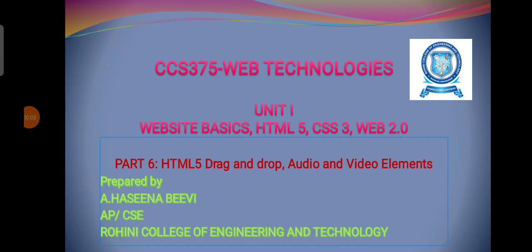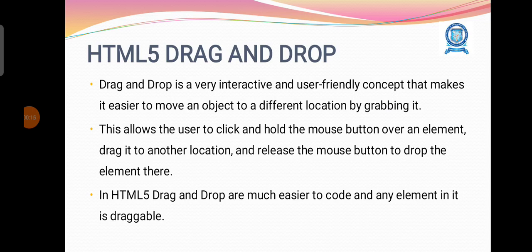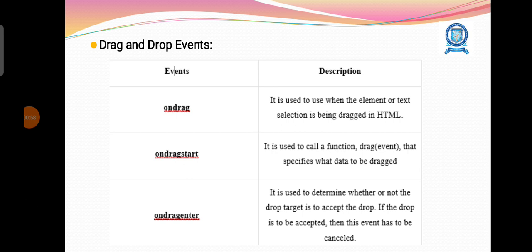This video lecture covers drag and drop and audio/video control elements of HTML5. HTML5 is the advanced version of HTML which supports more attributes to develop web pages. One such facility is drag and drop — we can drag an object or image from one place to a destination. This is a very interactive and user-friendly concept that makes it easier to move objects to a different location by grabbing, clicking, and holding the mouse button, then releasing it to drop the element. There are several events associated with the drag and drop operation.